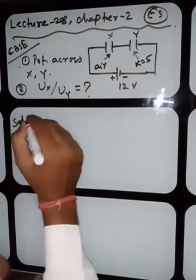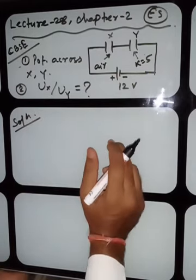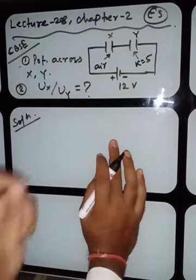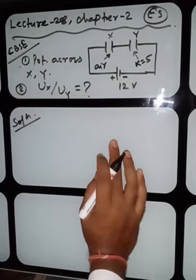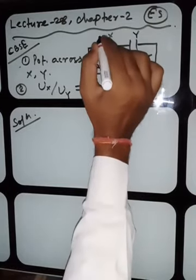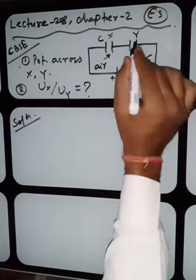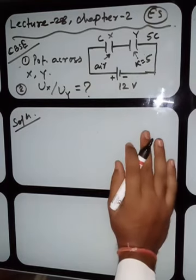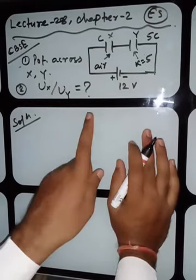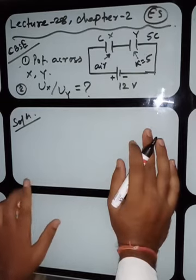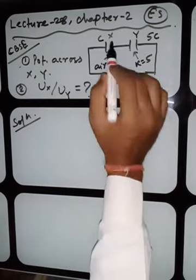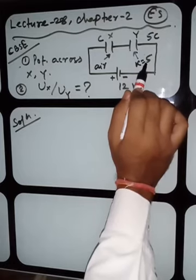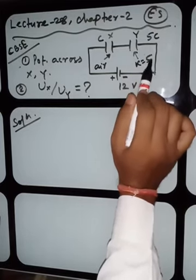For the solution, first you have to find the ratio of capacitance. Suppose the capacitance of X is C, then what will be the capacitance for Y? The capacitance will be 5 times C, because as we have studied, if a dielectric is introduced, the capacitance increases by K times. The dielectric constant is 5, so the capacitance will be 5C.